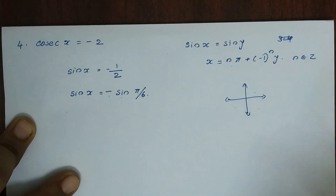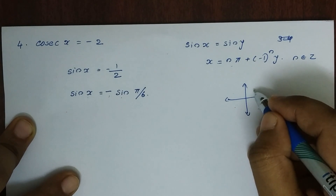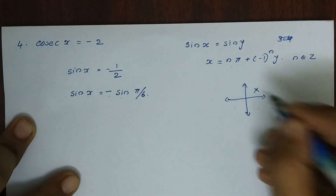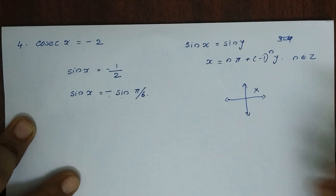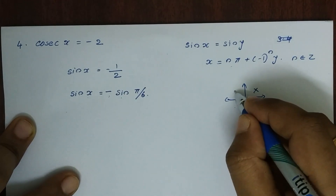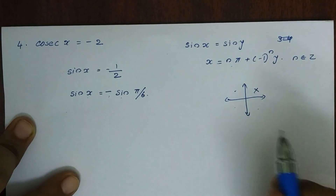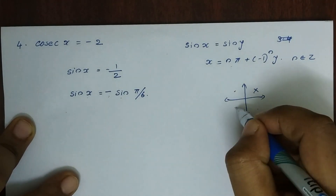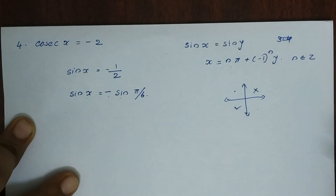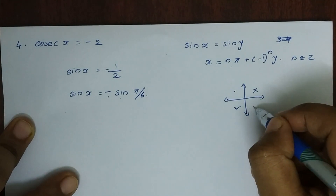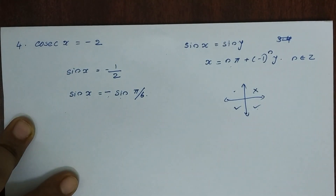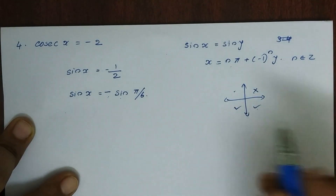Sin is negative in certain quadrants. In the first quadrant, sin is positive. In the second quadrant, sin is positive. But in the third quadrant and in the fourth quadrant, sin is negative.